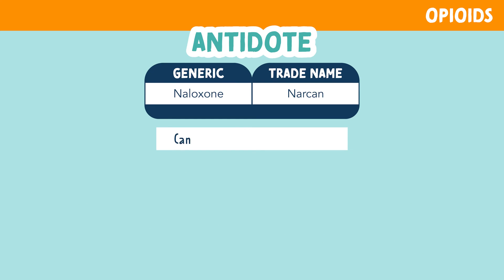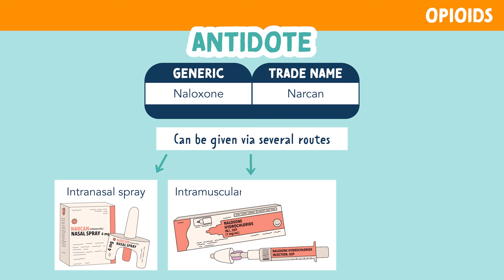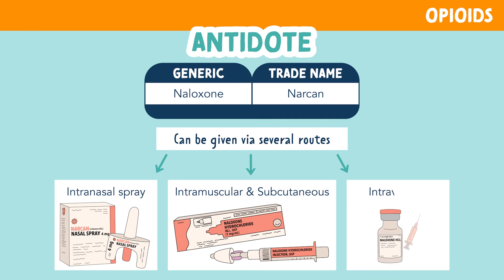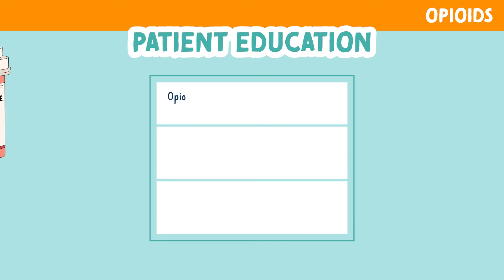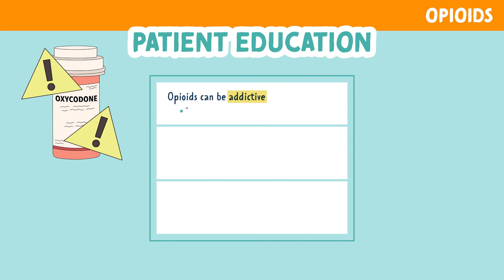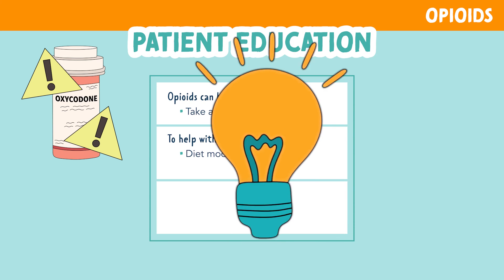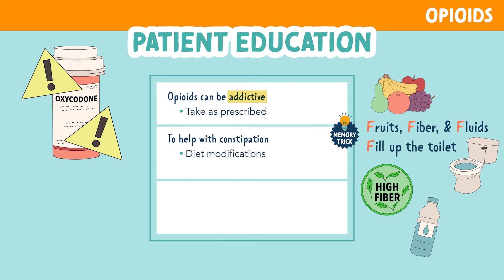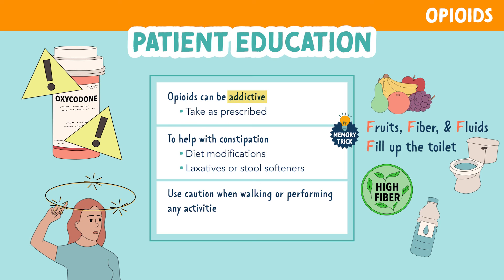Naloxone can be given by many routes: intranasal spray, intramuscularly, subcutaneously, and intravenously. For patient education — opioids can be very addictive, so they should be taken as prescribed by the healthcare provider. To help with constipation, educate patients to make diet modifications such as increasing fruits, fiber, and fluids. They may also use laxatives or stool softeners. Educate your patient to use caution when walking or performing any activities to prevent injury, as opioids can cause drowsiness.